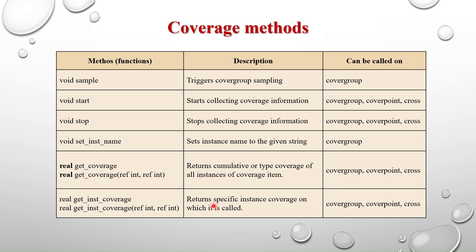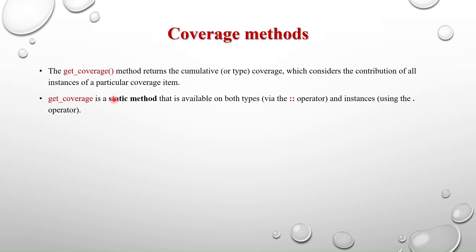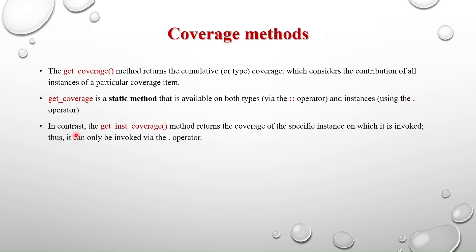For each instance we can call get_inst_coverage and it will return the coverage percentage. It can be called on cover group, cover point, and cross coverage. The get_coverage method is a static method because it returns cumulative type coverage considering all instances — so we can use the scope resolution operator or dot operator to access it. When we have a static method, we can access it via the scope resolution operator or the dot operator. In contrast, get_inst_coverage returns coverage of the specific instance on which it is invoked, so it can only be invoked via the dot operator.